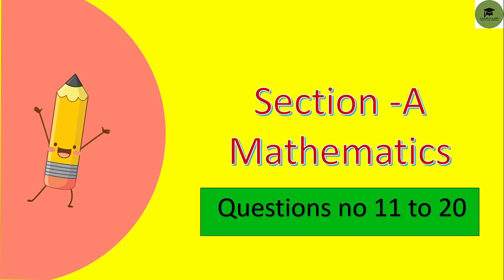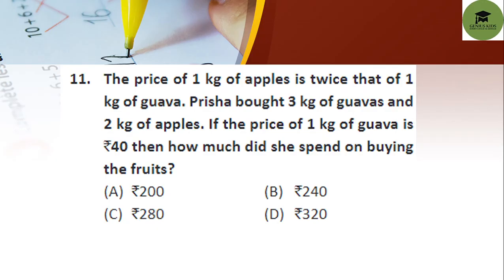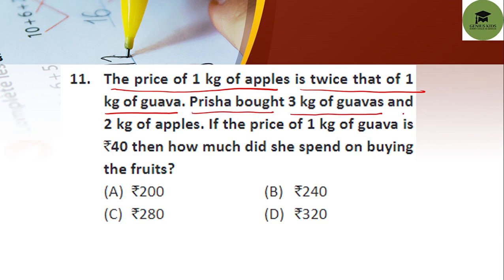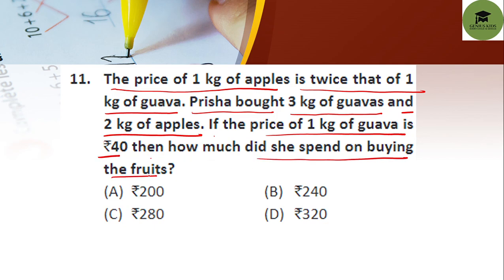Let's start. The question is: the price of 1 kg of apples is twice that of 1 kg of guava. Prisha brought 3 kgs of guavas and 2 kgs of apples. If the price of 1 kg of guava is rupees 40, then how much did she spend on buying the fruits? The first condition is: 1 kg of apple price equals twice the 1 kg of guava price.